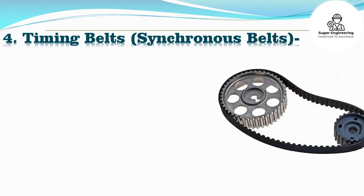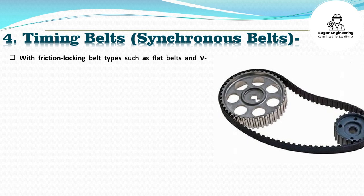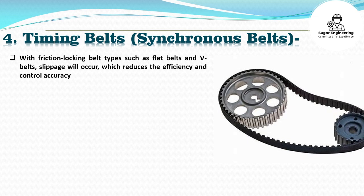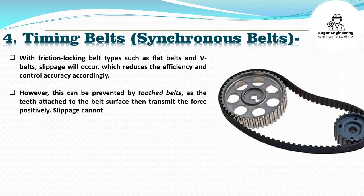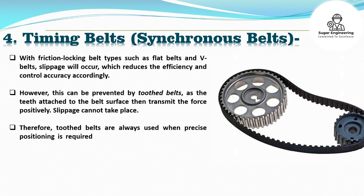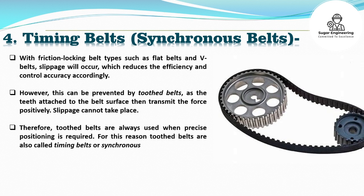Timing belts (Synchronous belts): With friction-locking belt types such as flat belts and V-belts, slippage will occur, which reduces the efficiency and control accuracy accordingly. However, this can be prevented by toothed belts, as the teeth attached to the belt surface transmit the force positively — slippage cannot take place. Therefore, toothed belts are always used when precise positioning is required. For this reason, toothed belts are also called timing belts or synchronous belts.